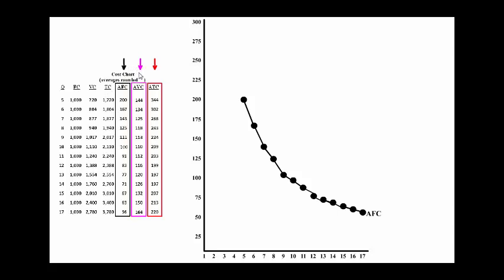Let's look at the average variable cost curve. Notice as you produce more and more units of output, your average variable costs start downward to this point at the 10th unit and then begin to rise.